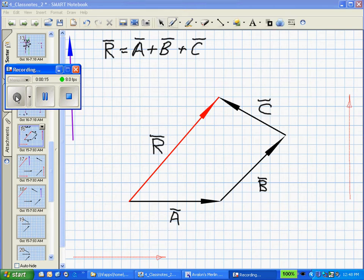Now that we've seen how vectors a, b, and c can be added together to form the resultant vector r, which is equal to a plus b plus c,